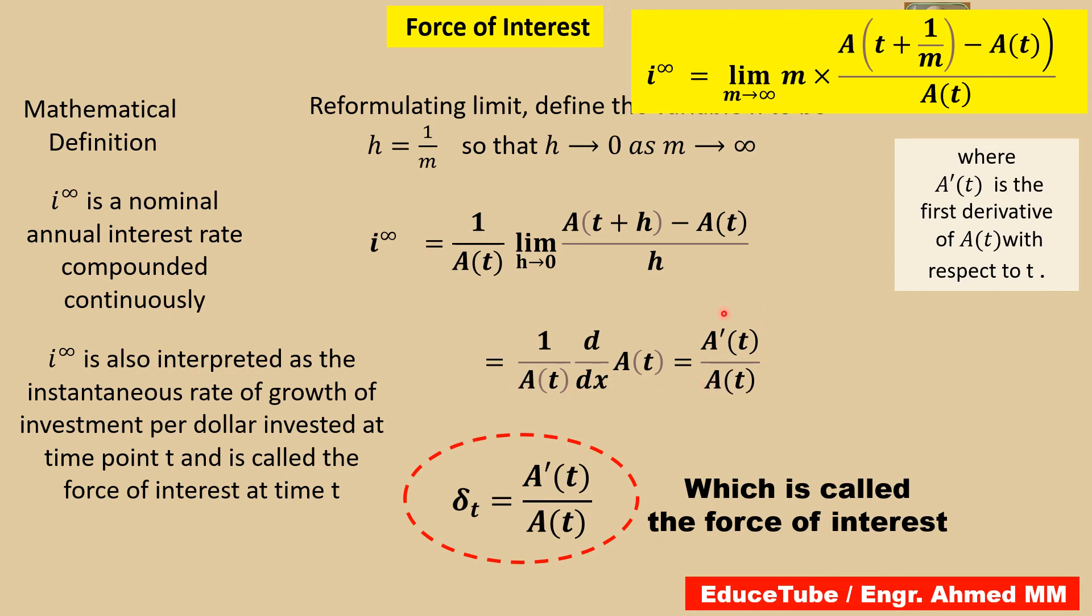So what we can say in these positions: i^(∞) is a nominal annual interest rate compounded continuously.